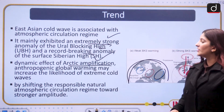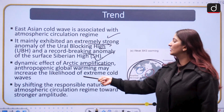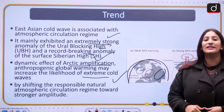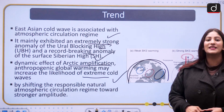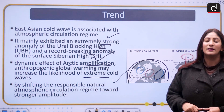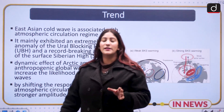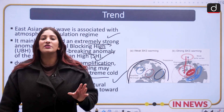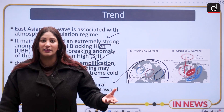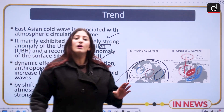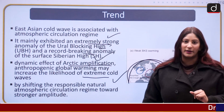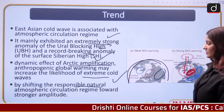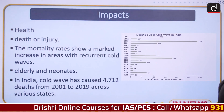The dynamic effect of arctic amplification and anthropogenic global warming may increase the likelihood of extreme cold waves. Arctic amplification, or polar amplification, refers to the change in the net radiation budget which manifests with a change in polar climate. If there is an anomaly in the net radiation balance of the Earth, the temperature change is much larger in the polar region — specifically the Arctic — compared to other parts of the planet. This shifts the responsible natural atmospheric circulation regime towards stronger amplitudes.